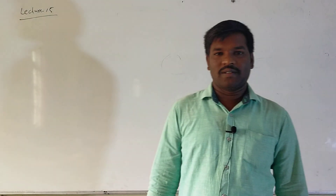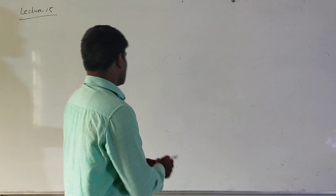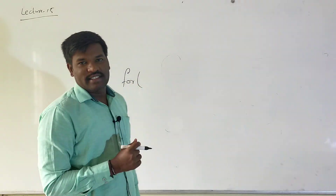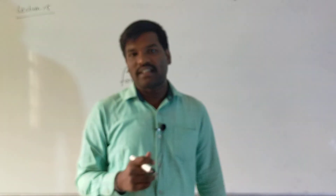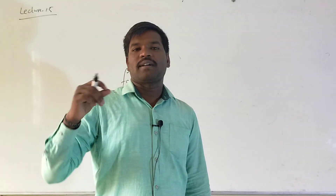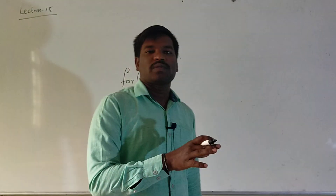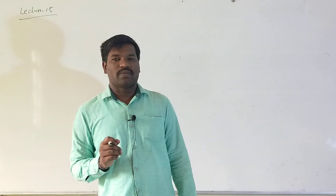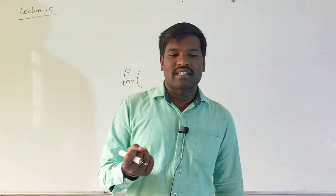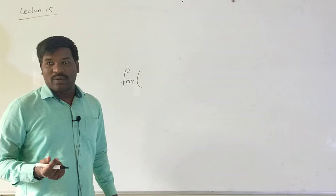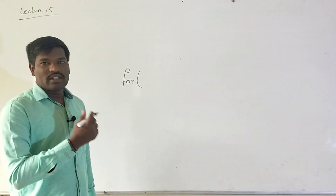Welcome back to computer science class. Today we are discussing the topic of the for loop. A for loop is used to execute statements repeatedly until a fixed number of times or until the condition becomes false. It is similar to while and do-while, but the difference is that you can easily see how many times the loop will be executed.